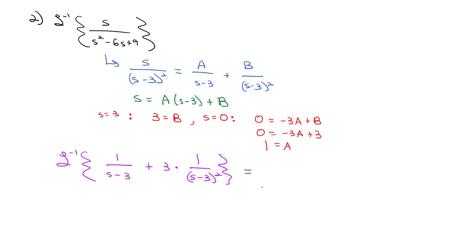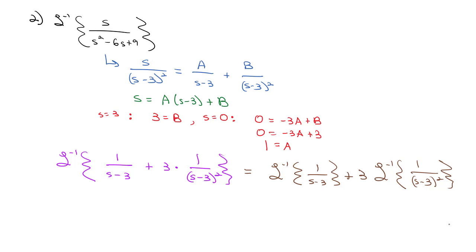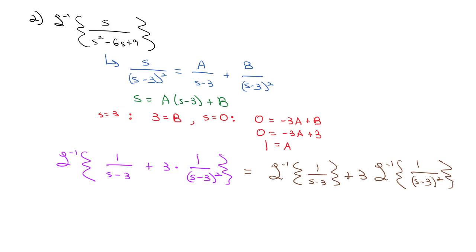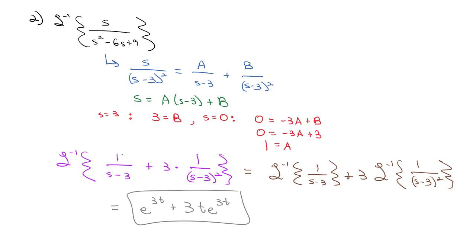We distribute the inverse Laplace transform through, giving us the inverse Laplace transform of 1/(s minus 3) plus 3 times the inverse Laplace transform of 1/(s minus 3) squared. Looking at our table, equations 10 and 11 are most helpful. Equation 10 with s minus 3 gives e to the 3t, and equation 11 with (s minus 3) squared gives t·e to the 3t. So our answer is e to the 3t plus 3t·e to the 3t.